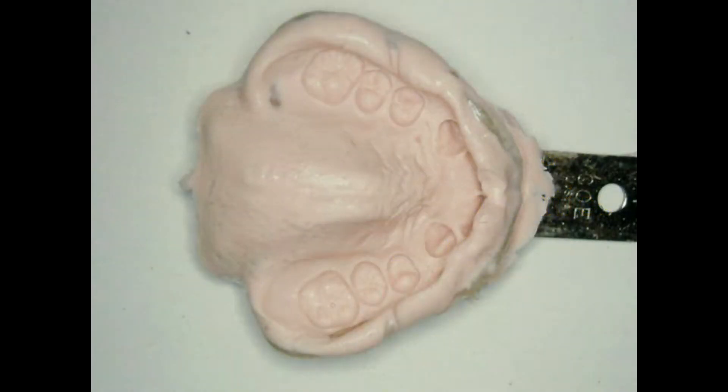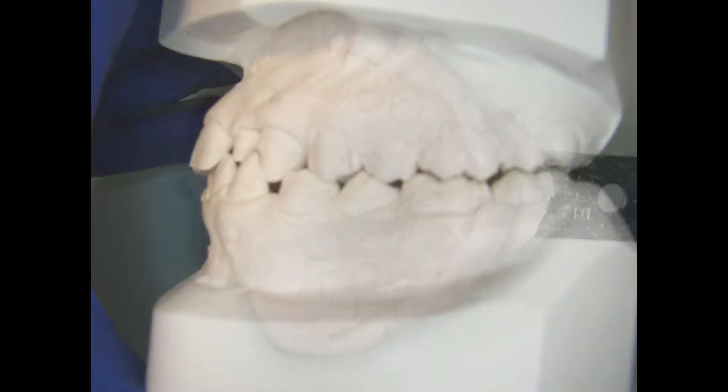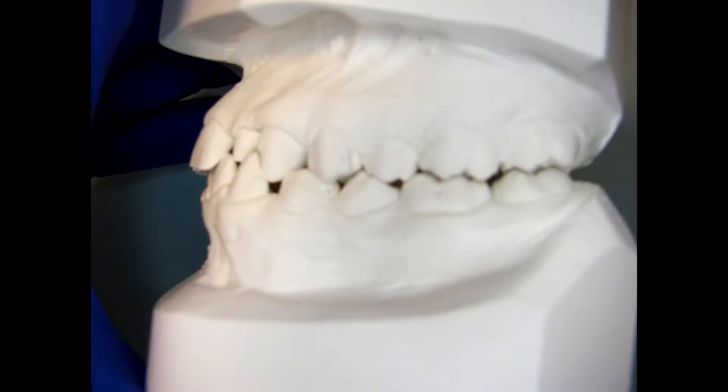Traditionally, when an orthodontist wanted to make a model of the patient's teeth, an alginate impression was taken and a plastered dental model was created.